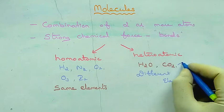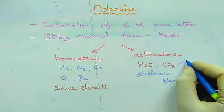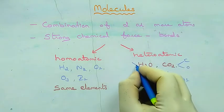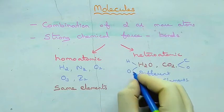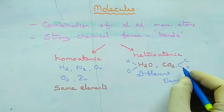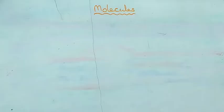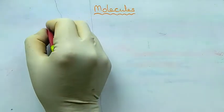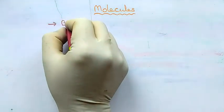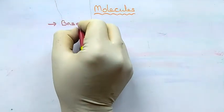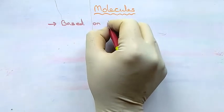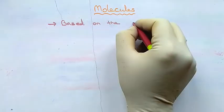In carbon dioxide there are two types of elements — carbon and oxygen. In water also there are two types of elements — hydrogen and oxygen. Based on the types of entities, we divide molecules into two types: homoatomic and heteroatomic.